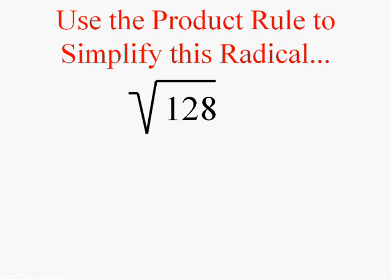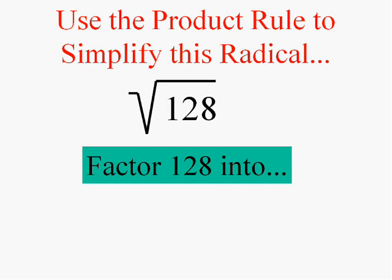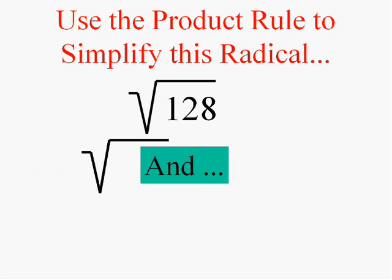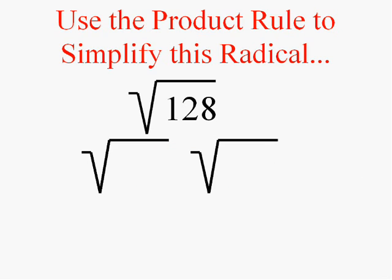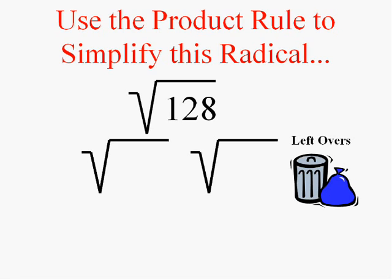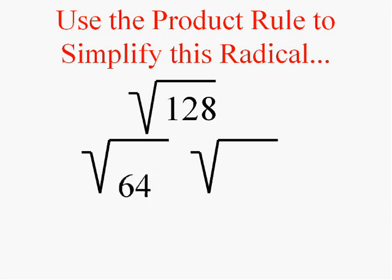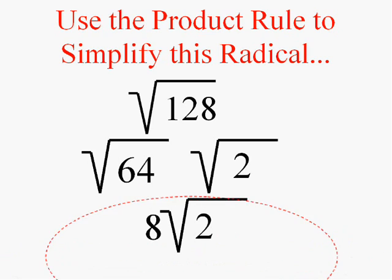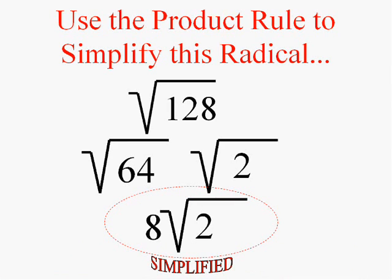Don't let large numbers scare you — there should be a perfect square that works; just keep trying them until you find one that goes in. I'm going to factor 128 into the largest perfect square that goes into it times whatever's left over. The largest perfect square is 64, and 128 divided by 64 leaves 2. The square root of 64 is 8, and the square root of 2 is just the square root of 2. We're doing the same thing every time — you just need to know your perfect squares.